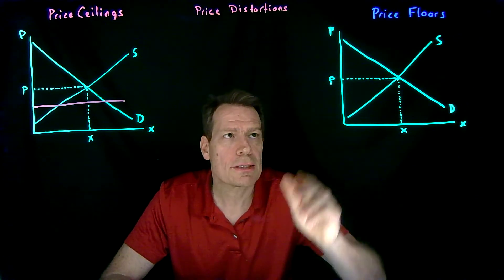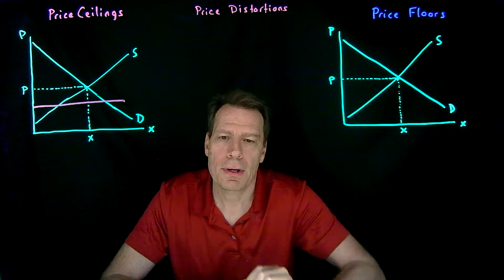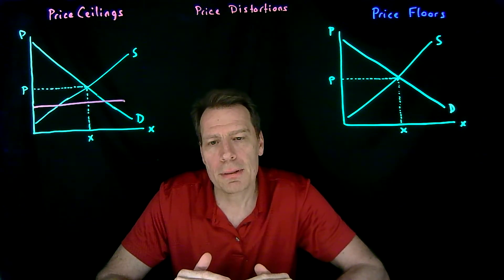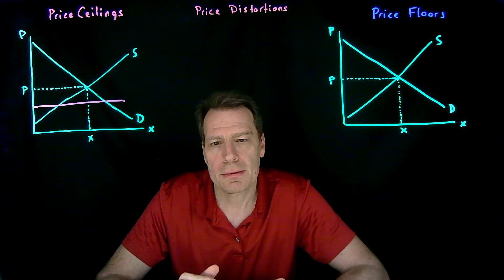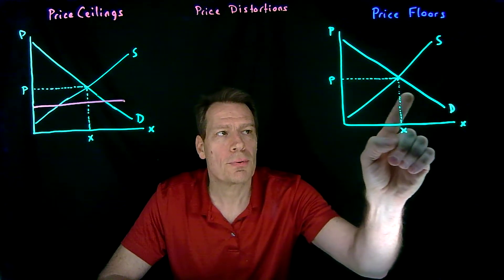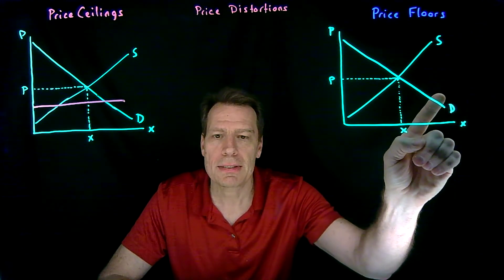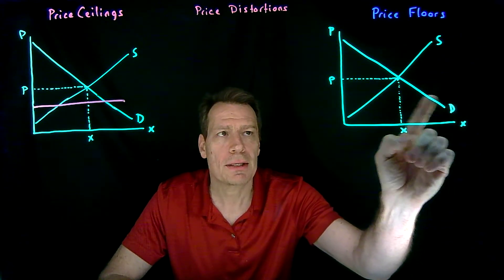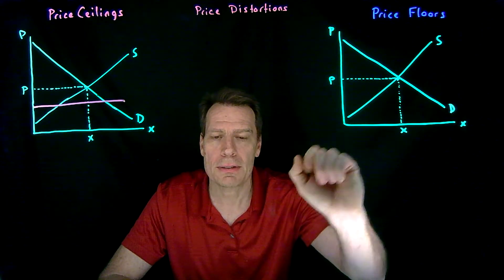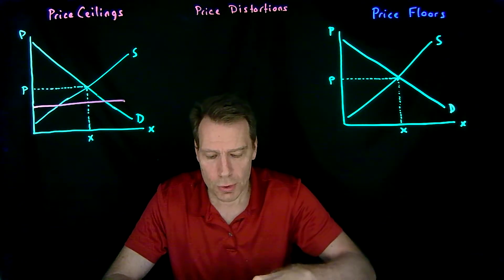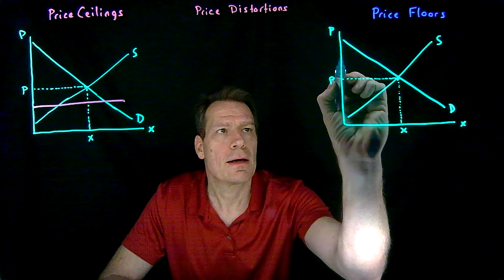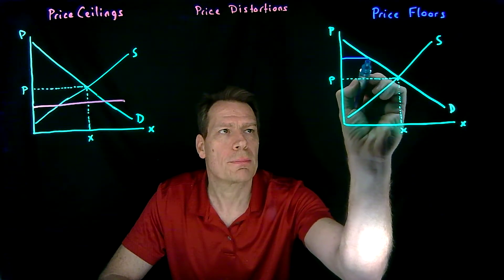If the government sets a price floor, it says you can't charge a price below this price. If it sets that price floor below the equilibrium price, that would have no effect because the market doesn't want a price below that anyways. So in order for a price floor to have an effect, it would have to be set above the equilibrium price.